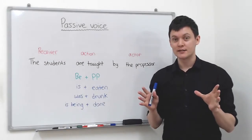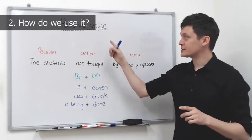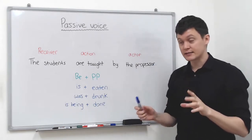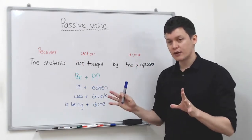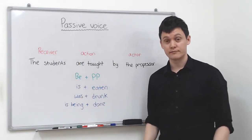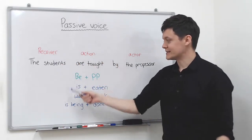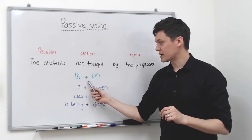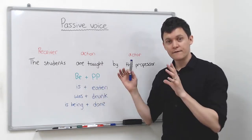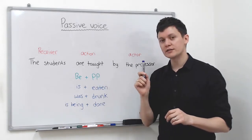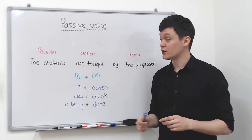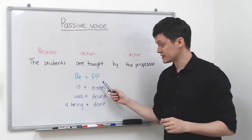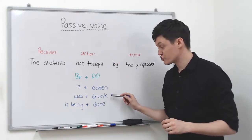Now let's look at how to use the passive voice — how to make a sentence with it. The first step is easy: we put the receiver in the subject position. The hard part is the structure. It's B plus past participle. The first thing you must remember is we are always going to use the past participle with the passive voice. So as soon as you use the passive voice you know you've got to have the past participle — in this case: taught, eaten, drunk, and done.